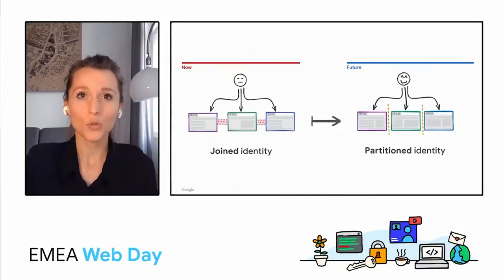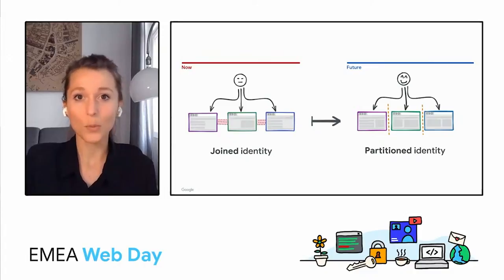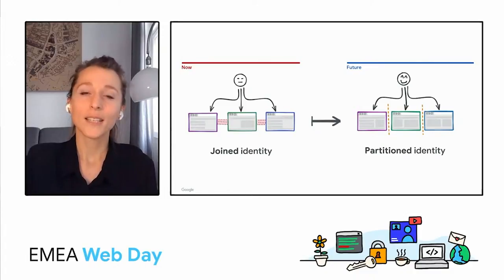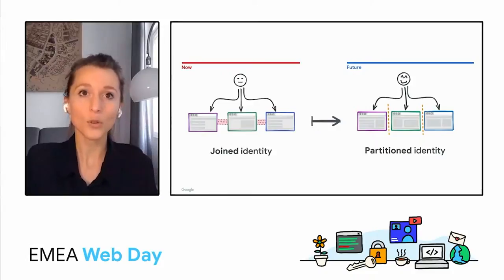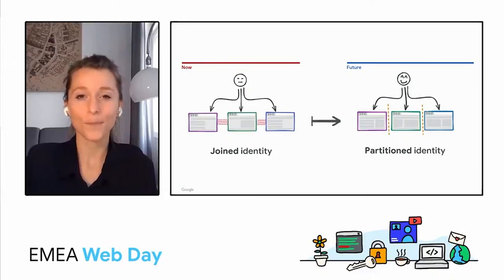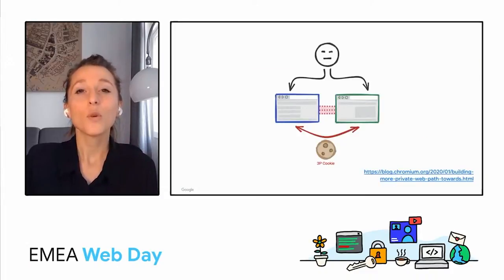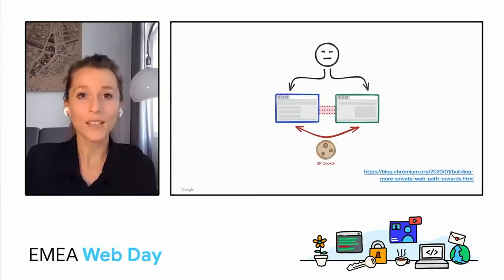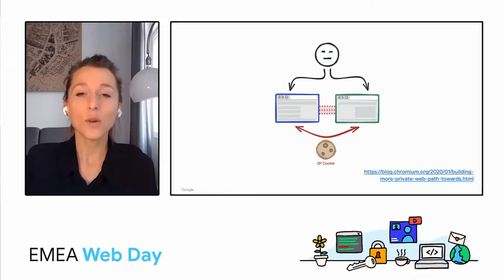And this is valid whether or not you have anything advertising related in your stack. To quickly refresh on what Roan introduced with the privacy model, we want to move from a joined identity to a partitioned identity. And anti-tracking efforts help us do this because they phase out or replace mechanisms that enable identity joining. Today, one primary mechanism used to join user identity across sites is third-party cookies.